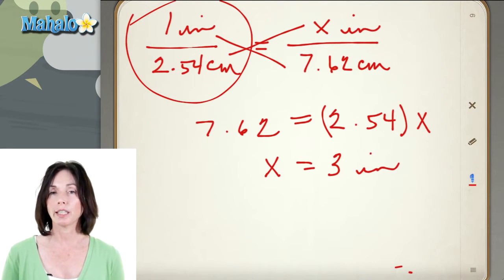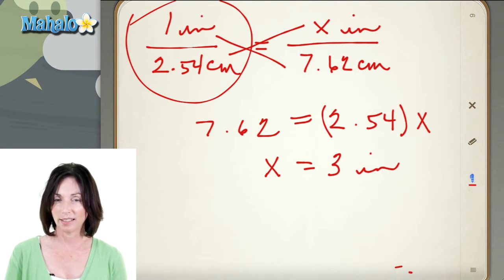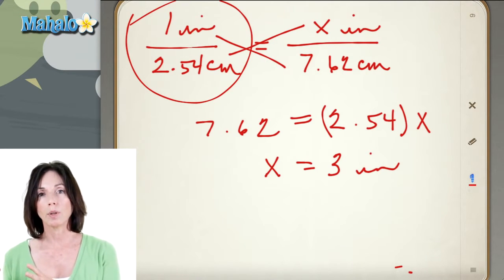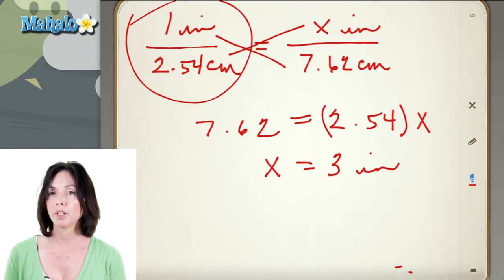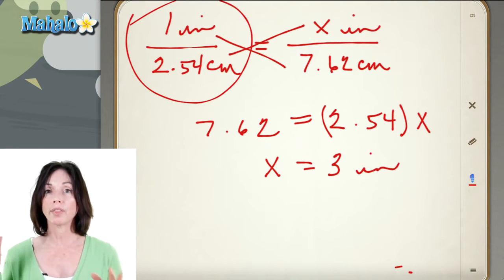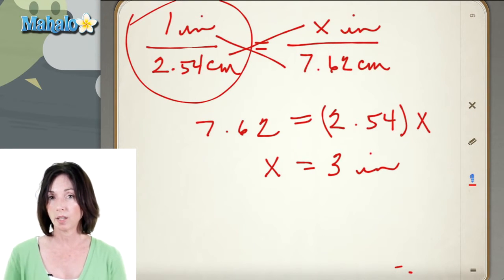So whenever you need to convert inches to centimeters or centimeters to inches, this is how you can do it. You write down your conversion factor and then you set that equal to what you're trying to convert. But just make sure that your inches and your centimeters are on the same side on both sides of the equation.